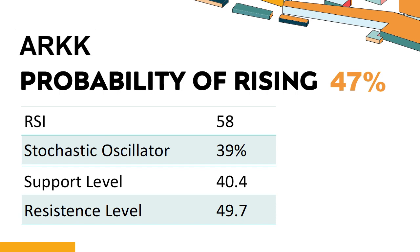What technical factors should you consider when analyzing ARKK? Technical Signals and Analysis: ARKK's 14-Day Relative Strength Index (RSI) value was 58. When the RSI is between 50 and 70, it generally indicates that the stock is moderately bullish. This means that the security's price has been rising but has not yet reached overbought levels, which are usually considered an RSI reading of 75 or higher.